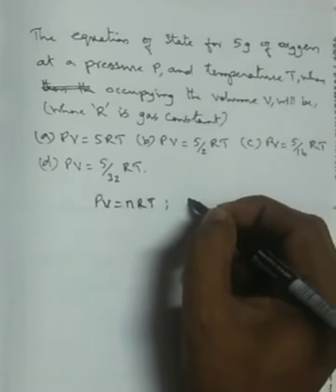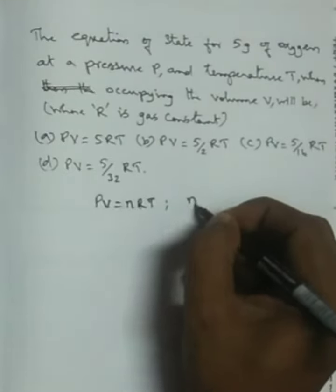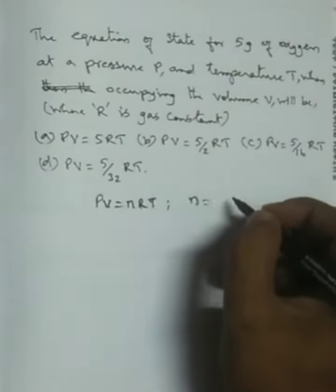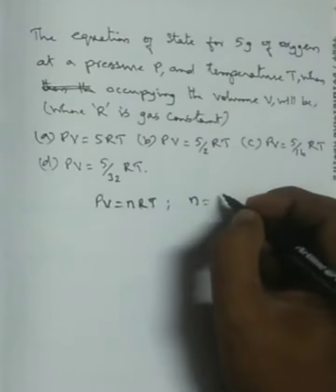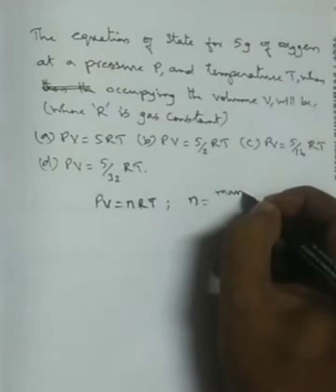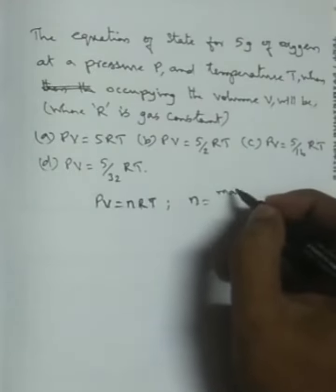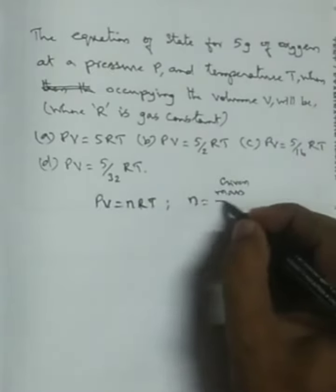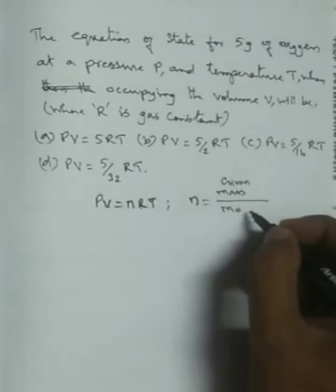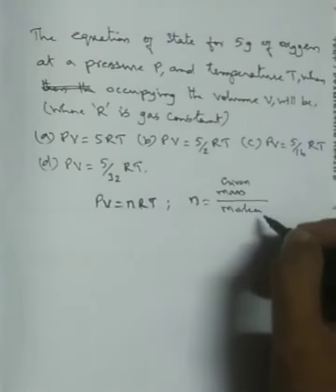Let's look at n, the number of moles, equal to given mass divided by molecular mass. So that is given mass, 5 grams, divided by molecular mass and molar mass.